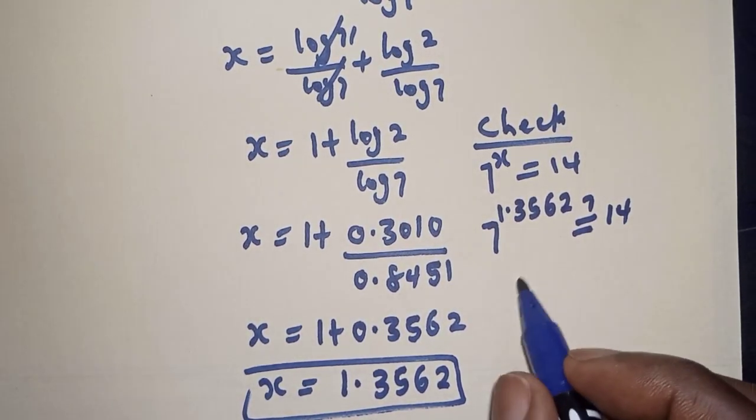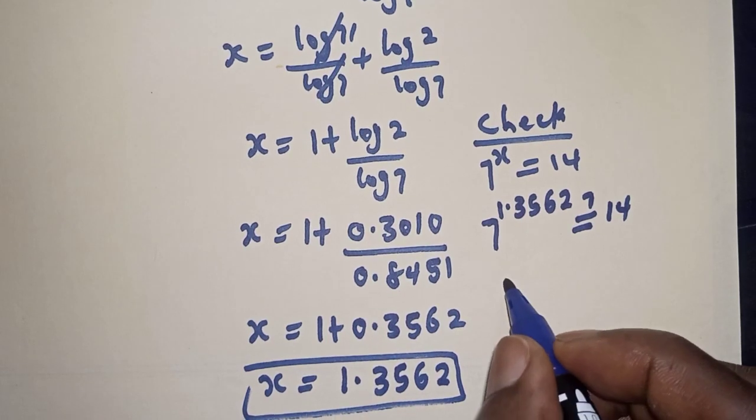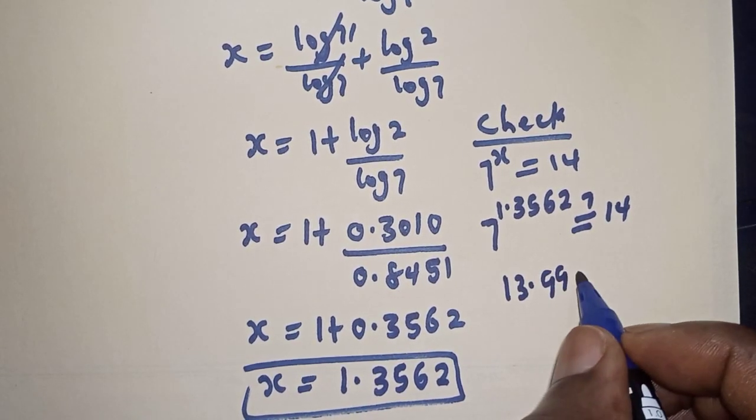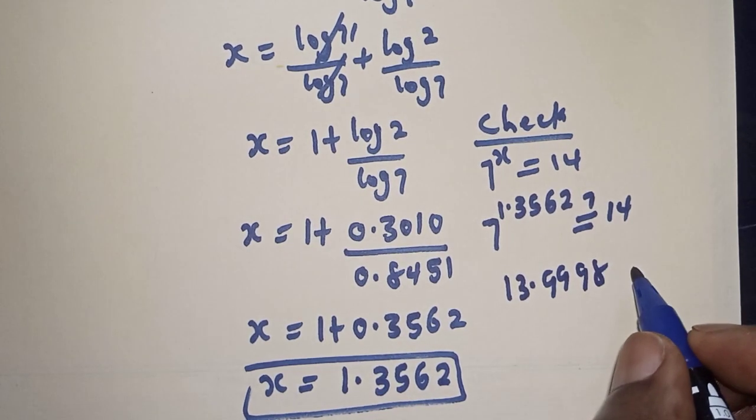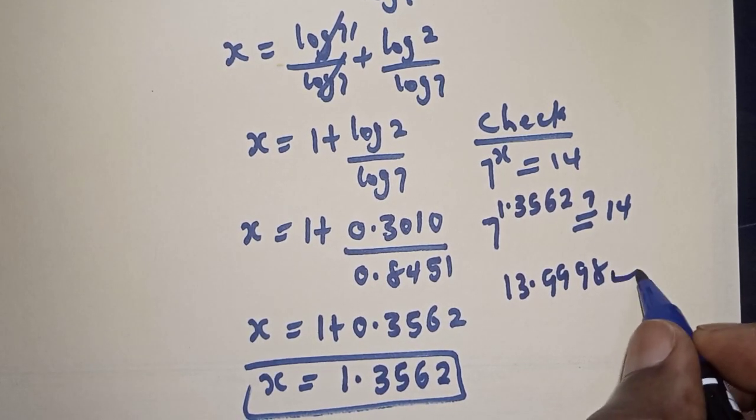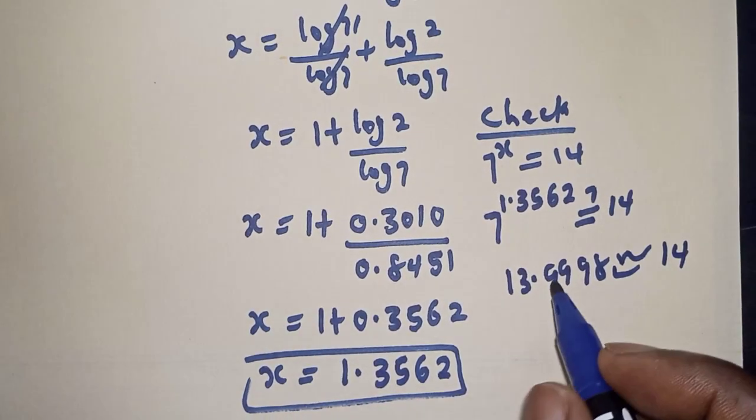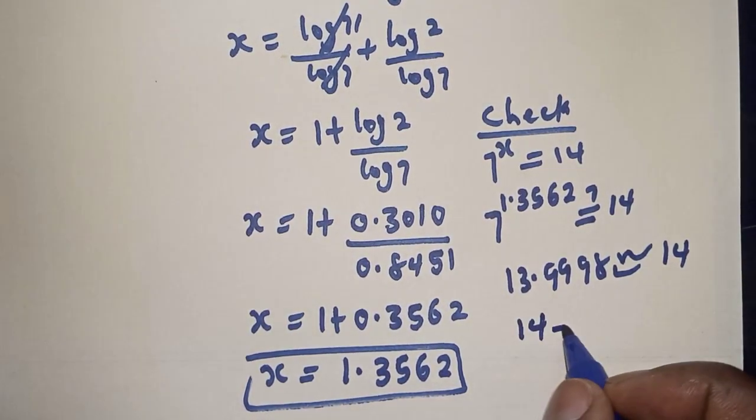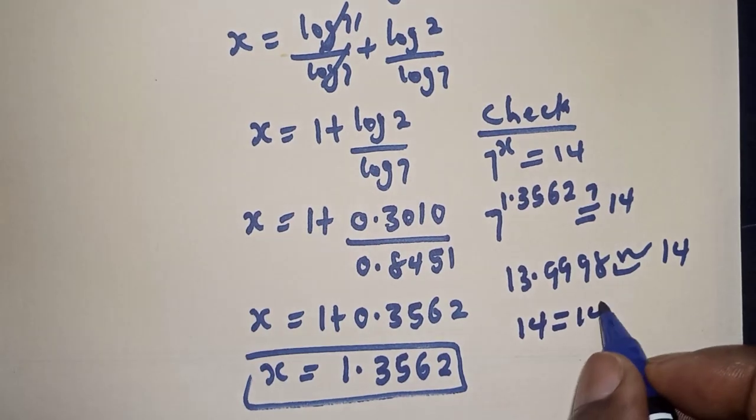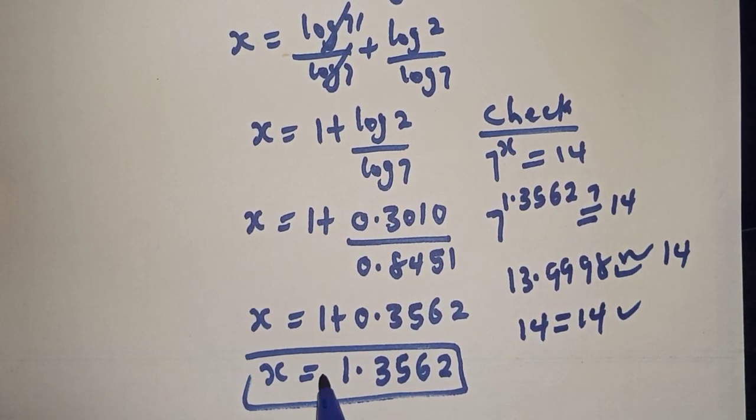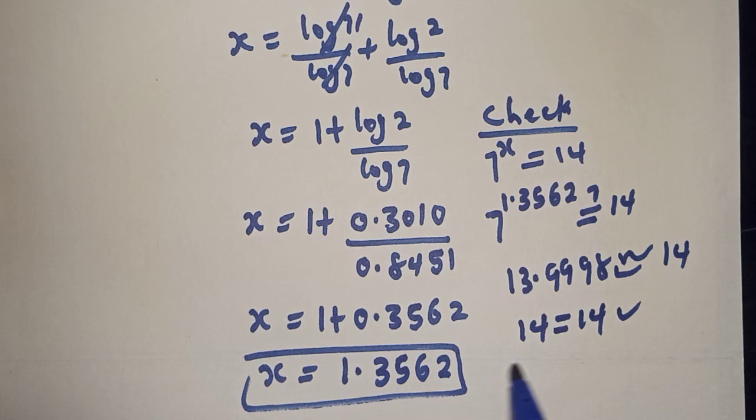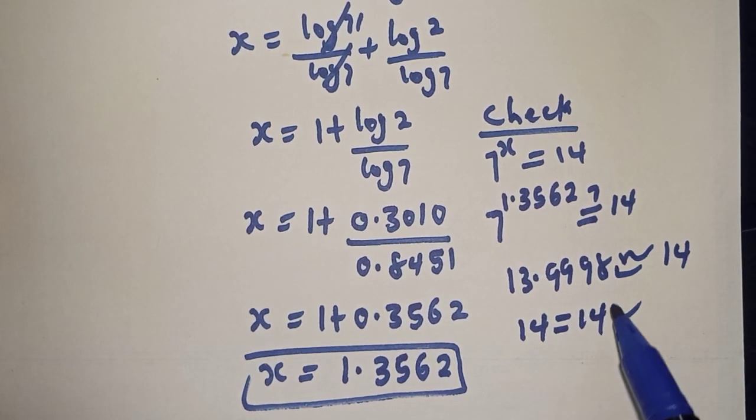7 raised to power 1.3562 is 13.9998, which is approximately equal to 14. Therefore, the left-hand side 14 equals the right-hand side 14, which satisfies the given equation at s equals 1.3562.